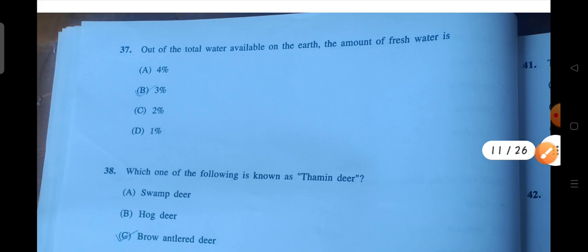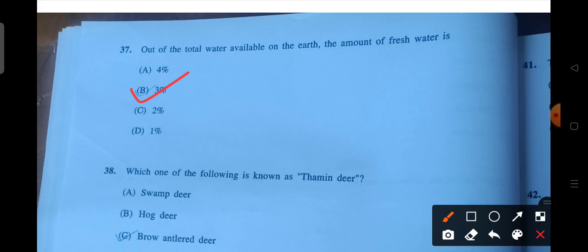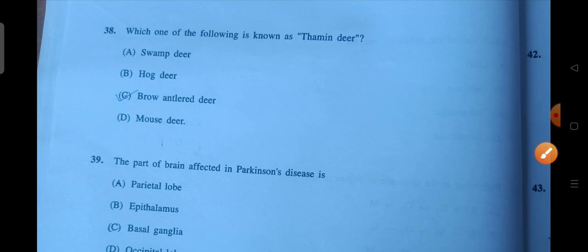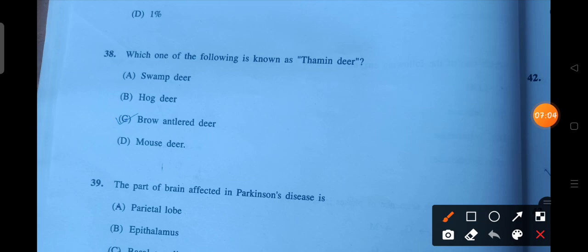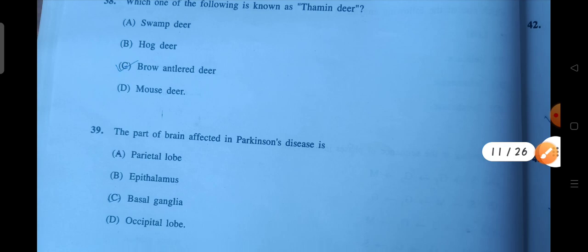Next is out of the total water available on the earth, the amount of fresh water is. So that is your 3%, C, 2.5%. So either 3 or 2, between these two, either could be the correct answer. Next is which one of the following is known as Thamin deer? So the correct answer is C. Next is the part of brain affected by Parkinson disease is your basal ganglia. C will be the correct answer.